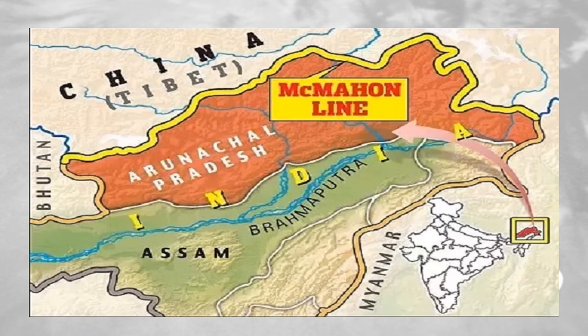Henry McMahon proposed the border. India maintains that the McMahon Line, a 550-mile frontier that extends to the Himalayas, is the official legal border between China and India. But China never accepted it.